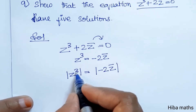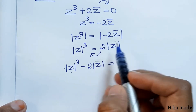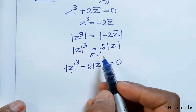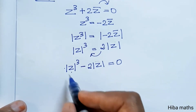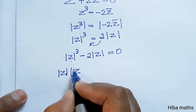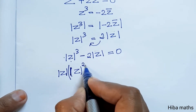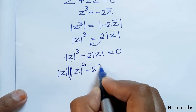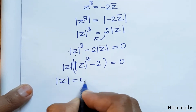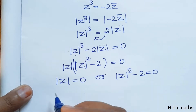Applying modulus to the cube gives |Z|³. The minus becomes plus 2, and |Z̄| = |Z|, so we get |Z|³ = 2|Z|. We apply one |Z| value to balance, giving |Z|(|Z|² − 2) = 0.